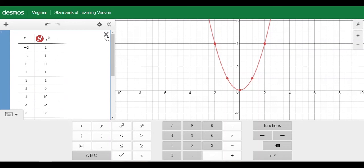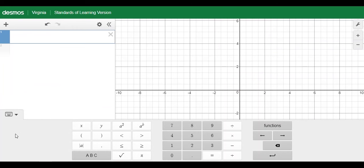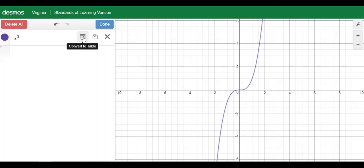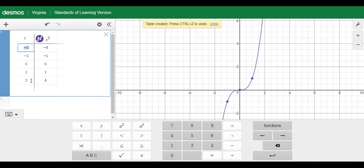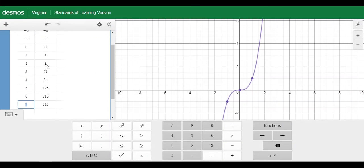To get your list of perfect cubes, do the same thing except type x cubed. To do that, click x then the A to the B button and then 3. Then click the gear icon and table. If you need a longer list, click in the last row and click enter repeatedly. That gives you your list of perfect cubes.